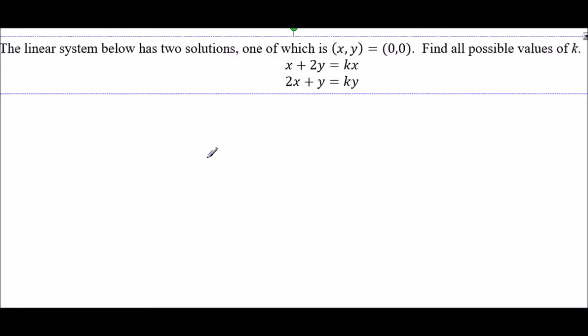It's question number 5, which is from the linear system section. The question says, the linear system below has two solutions, one of which is x equals 0, y equals 0. Find all possible values of k. So I have these two equations. Let me label them 1 and 2. So it's a linear system, but there's this weird k. It's a number that I don't know. It's a constant value. I just don't know what it is.